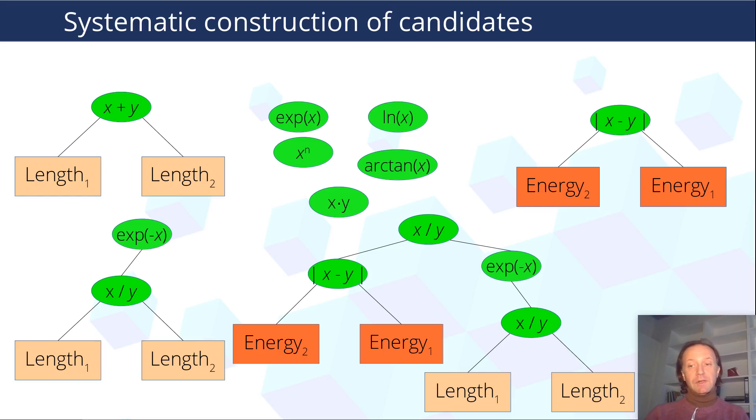Just a reminder that symbolic regression is this technique that combines so-called features by means of operators to give mathematical expressions, and the representation of choice is typically this tree representation because it is easy to combine trees and sub-trees in order to give other trees that are other symbolic expressions that are well formed.